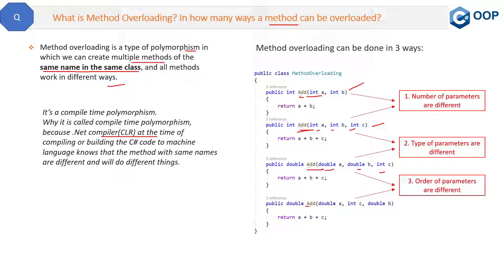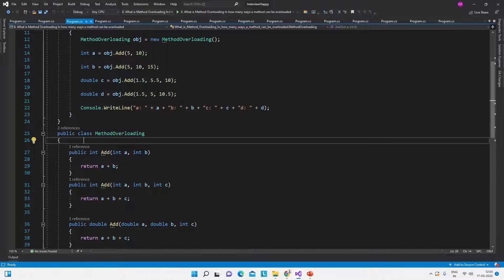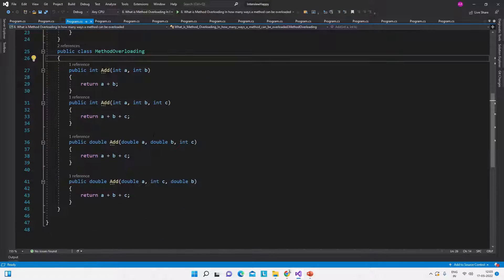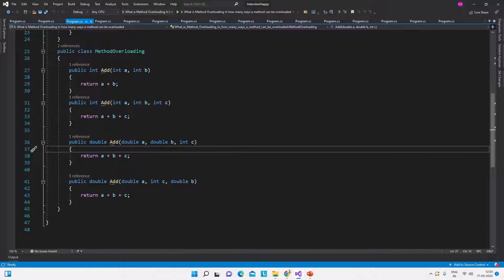The third way of overloading is when the order of parameters are different. In one method we have double, double, and integer, and in the last method we have double, integer, and double. So the order of the parameters are different. These are the three ways in which methods can be overloaded.